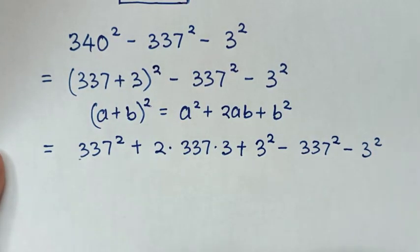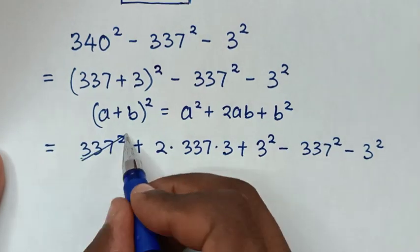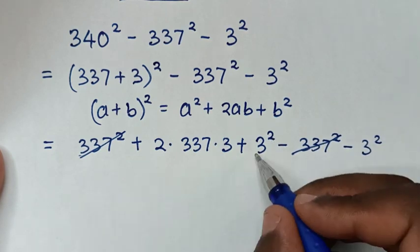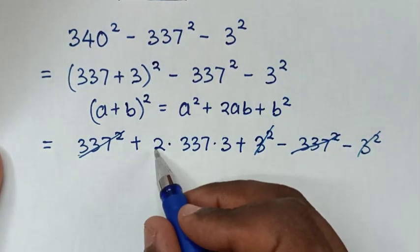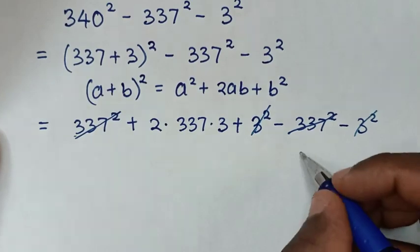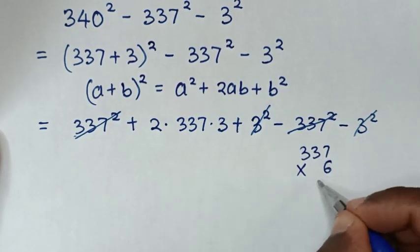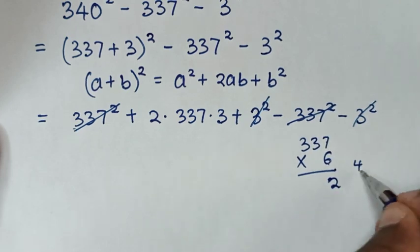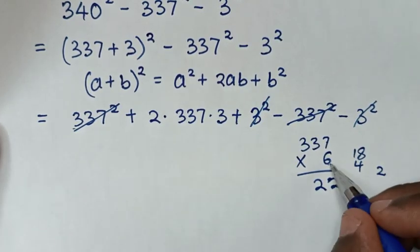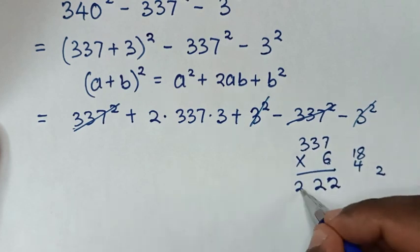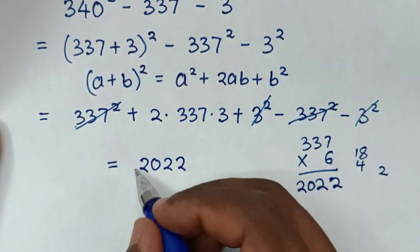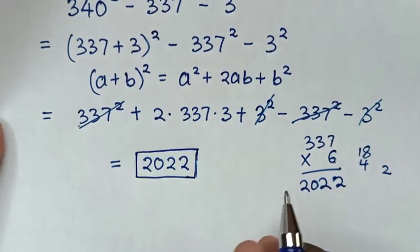To simplify: 337² minus 337² is 0, so those cancel. And 3² minus 3² is 0, so those cancel too. We are left with 2×337×3, which equals 337×6. Computing: 6×7 is 42 carry 4; 6×3 is 18 plus 4 is 22 carry 2; 6×3 is 18 plus 2 is 20. So the answer is 2022. Therefore this is our final answer.